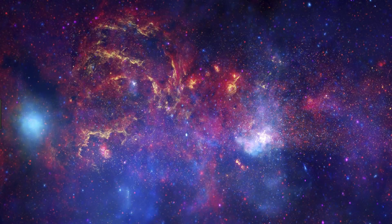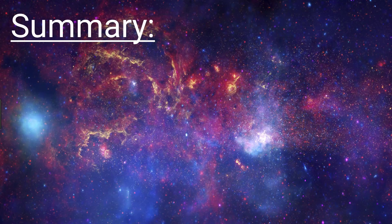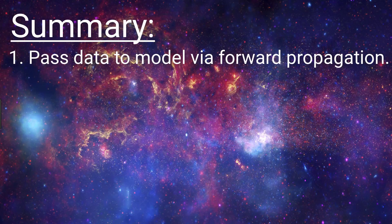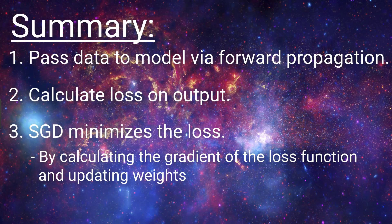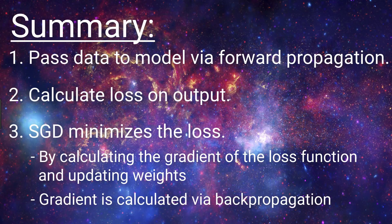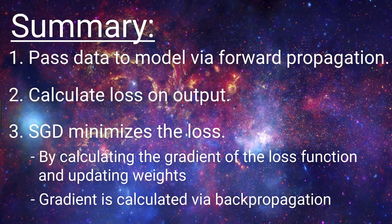Alright, we've done a lot, so let's give a quick summary of it all. When training an artificial neural network, we pass data into our model. The way this data flows through the model is via forward propagation, where we're repeatedly calculating the weighted sum of the previous layer's activation output with the corresponding weights, and then passing this sum to the next layer's activation function. We do this until we reach the output layer. At this point, we calculate the loss on our output, and then gradient descent works to minimize this loss. Gradient descent does this minimization process by first calculating the gradient of the loss function with respect to the weights, and then updating the weights in the network accordingly. To do the actual calculation of the gradient, gradient descent uses backpropagation. Remember to watch the videos referenced earlier on training a neural network if some of the pieces about gradient descent were a little unclear here.